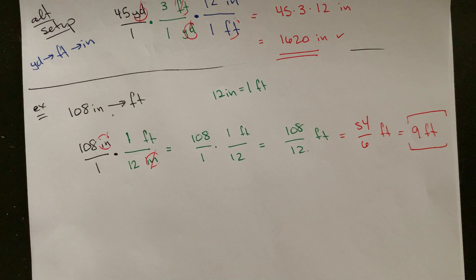So I guess 12 goes into 108 evenly. That makes sense, because times 10 would be 120 minus 12 would be our 108. So this is going to be nine feet.